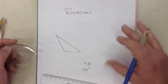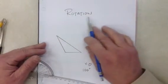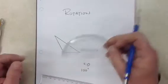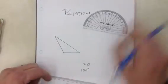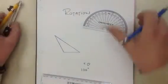Now we're going to be doing the second of the isometric transformations, and that's called a rotation. To do a rotation, you need a protractor, a ruler, and a compass.